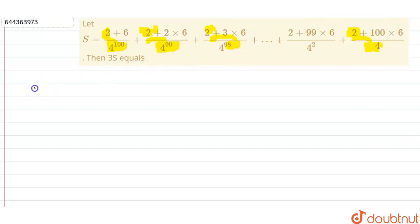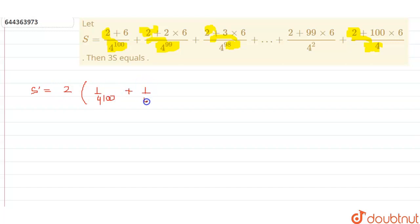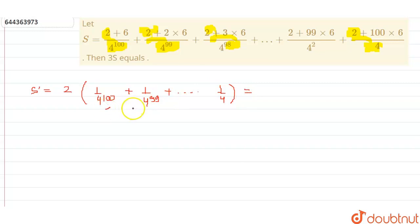We call this part S dash. S dash equals, taking 2 common: 1 upon 4 to the power 100 plus 1 upon 4 to the power 99, and so on up till 1 upon 4. This is a GP with first term 1 upon 4 to the power 100 and common ratio 4.